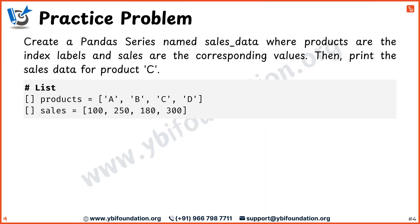Let's practice and learn by doing. The task is to create a pandas series named sales_data where the product names are the row index labels and the sales values are the corresponding data values. You have a list of products A, B, C and D, and a list of sales values 100, 250, 180 and 300 respectively. After creating the pandas series, you need to print the sales data. For the correct answer, check the discussion or comment section.